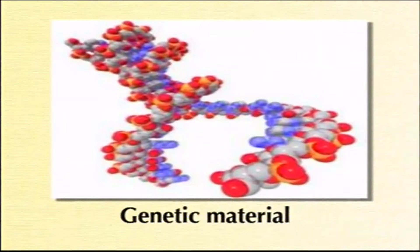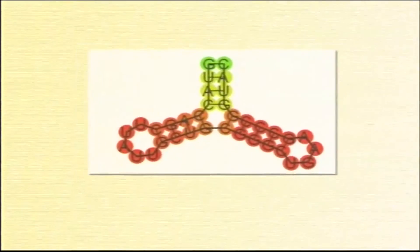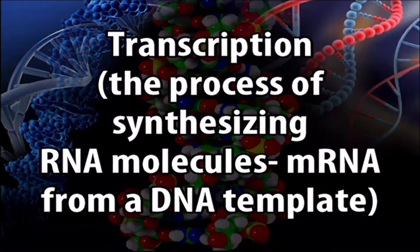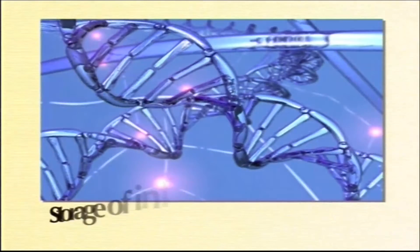These experiments establish beyond doubt that DNA is the genetic material. One of the important characteristics of DNA as an ideal genetic material is its capacity to store and transmit genetic information. The flow of information contained in sequences of DNA bases takes place through two important processes: transcription — the synthesis of messenger RNA molecules from a DNA template — followed by translation, the process of protein synthesis from mRNA. These two processes comprise the central dogma of molecular biology. DNA possesses and conveys several types of information required in this central dogma.